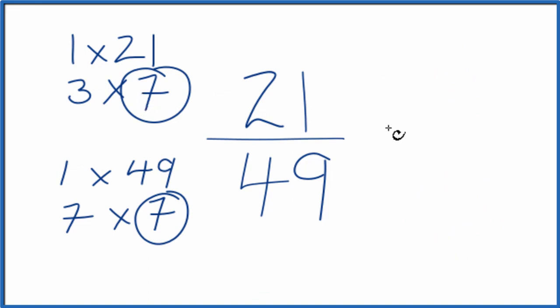21 divided by 7, that equals 3. And 49 divided by 7, that equals 7. So we've simplified 21/49 down to 3/7. And these are equivalent fractions.